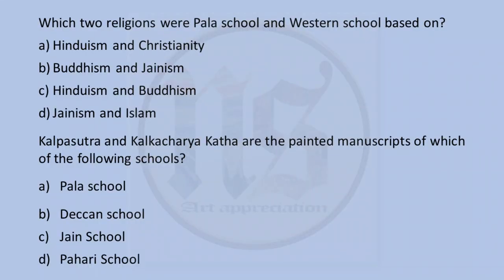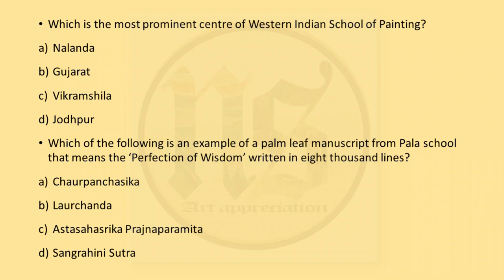Let us go through the multiple choice questions. First: which two religions were Pal School and Western School based on? Pal School was all about Buddhism and Western School, that is Jain School, was all about Jainism. So the answer is B — Buddhism and Jainism. Next: Kalpasutra and Kalkacharya Katha are the painted manuscripts of which school? They are both Jain texts and they belong to answer C, Jain School. Which is the most prominent center of Western Indian School or Jain School? Nalanda and Vikramshila were for Pal School; Jodhpur is a sub-school of Rajasthani miniatures. So we are left with Gujarat — the Jain school had main centers in Gujarat, few parts of Rajasthan and few parts of Central India. Answer is B.